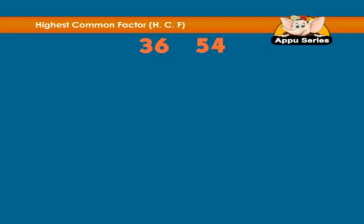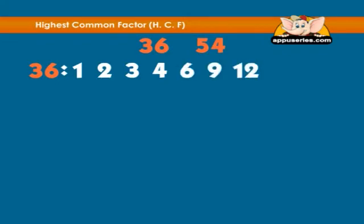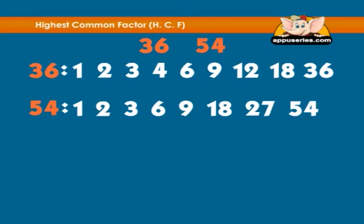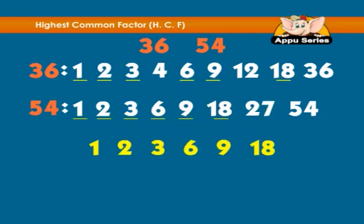Find the HCF of 36 and 54. For the number 36, the factors are 1, 2, 3, 4, 6, 9, 12, 18, 36. For the number 54, the factors are 1, 2, 3, 6, 9, 18, 27, and 54. The common factors are 1, 2, 3, 6, 9, and 18. The highest common factor is 18.